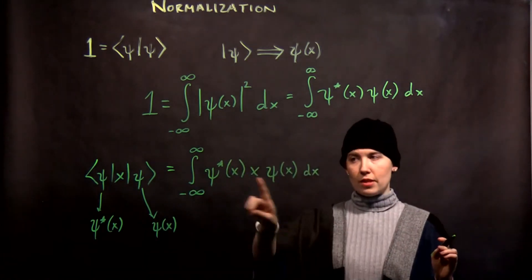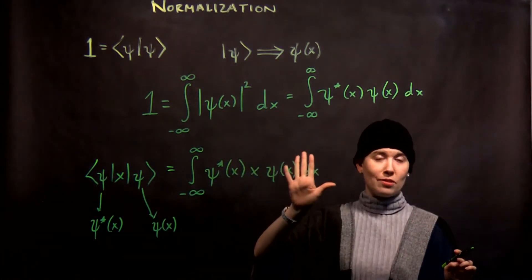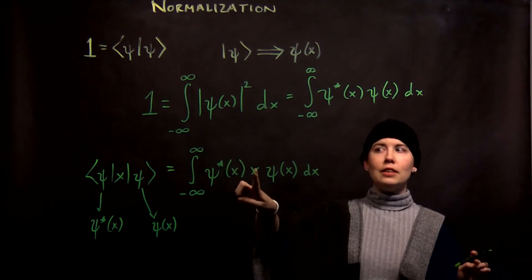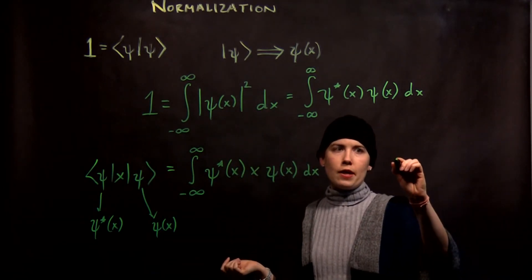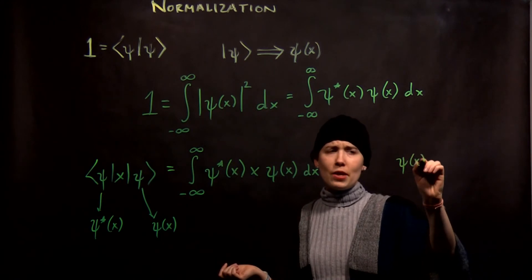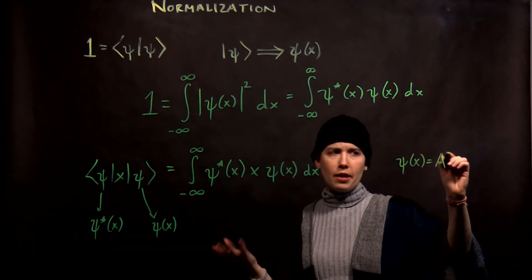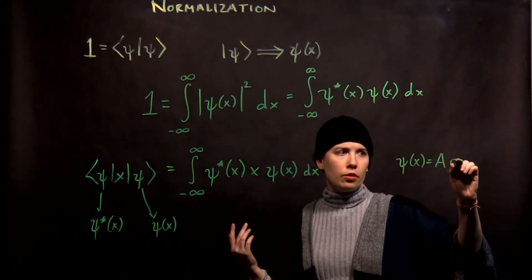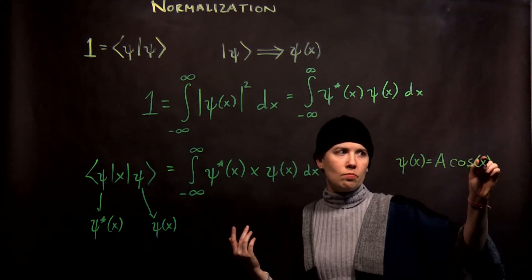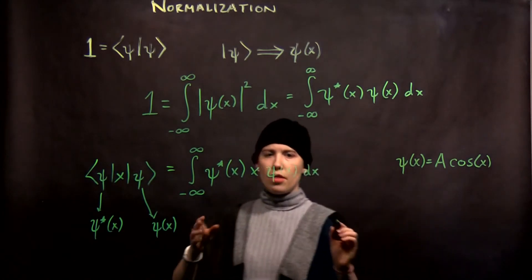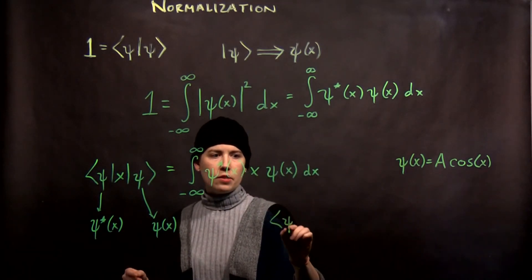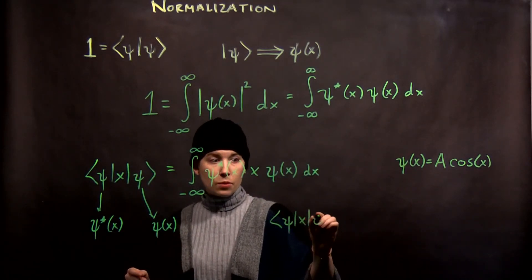So here's what's a little bit confusing. That x there is not a multiplication sign. That is literally the variable x. So if, for instance, we said that ψ(x) is equal to a, and I'll pick cosine of x. It's not necessarily a good wave function, but go with it. It's a wave function.